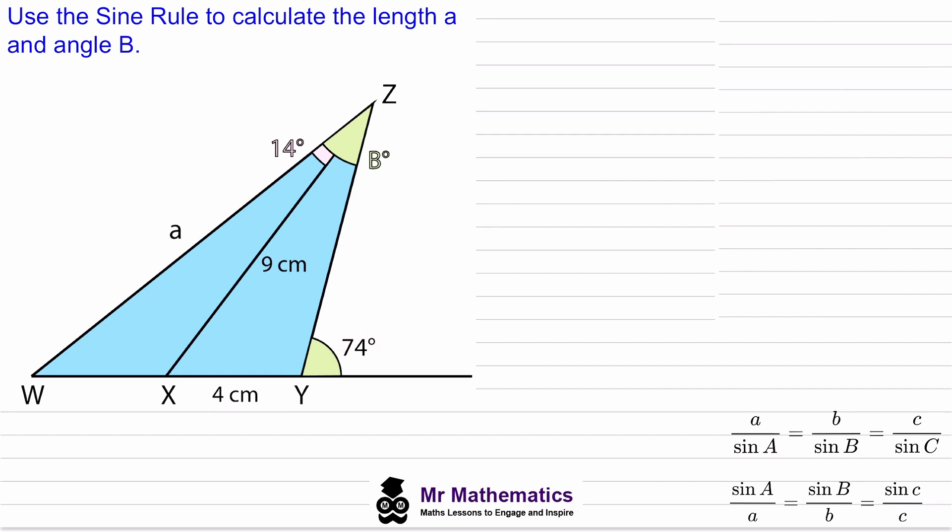So we can work out this angle as 180 minus the 74 which will give us 106 degrees.